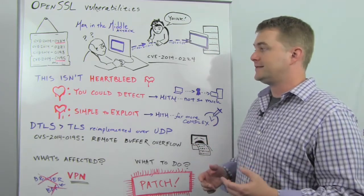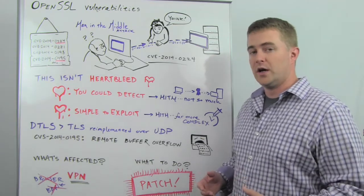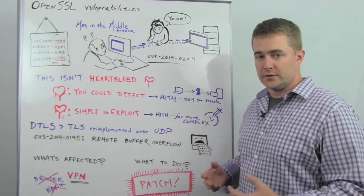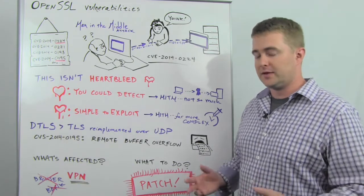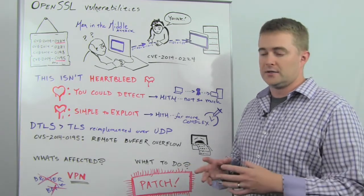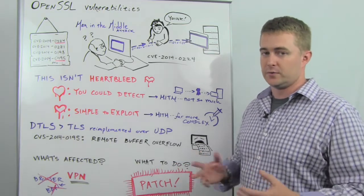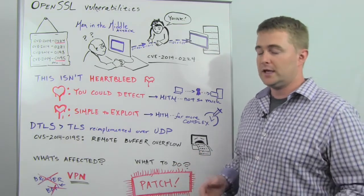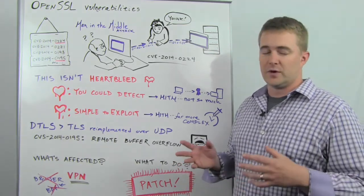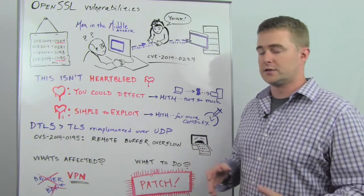That is very different from Heartbleed. While Heartbleed disclosed information, once the exploit script for Heartbleed had been circulated, basically anybody in the world could fire it off and gather information in bulk from vulnerable systems. In the case of this attack, it would require a much more targeted approach for somebody to actually exploit it.